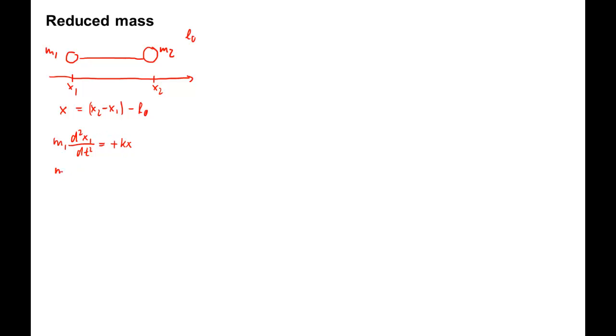For mass 2, we get m2 d squared x2 dt squared equals negative kx. The negative sign means that after extension, the spring pulls the mass back to the left.